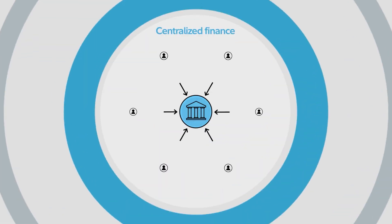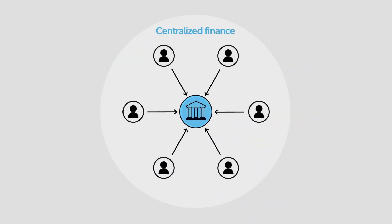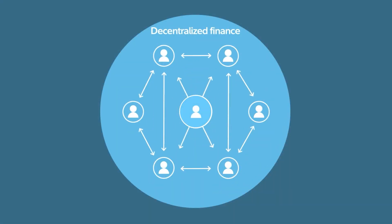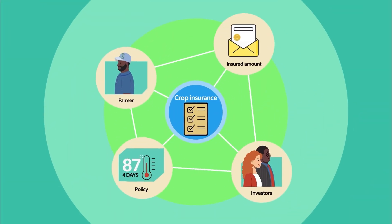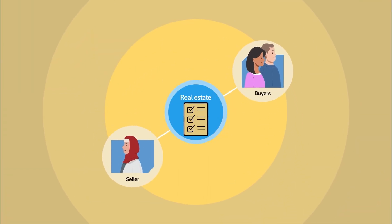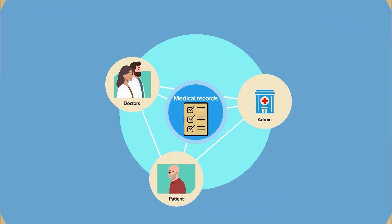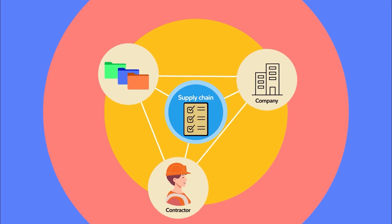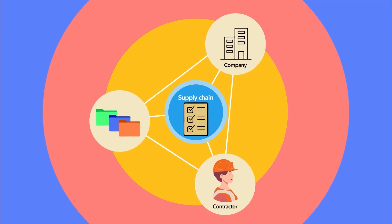But what can you do with smart contracts? Smart contracts enable developers to build decentralized applications, or dApps, that power decentralized finance, or DeFi — one of the main use cases of smart contracts. From crop insurance, to real estate, medical records, and supply chain management, the possibilities are endless.